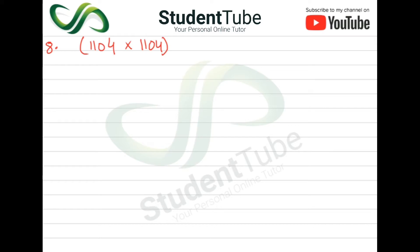Question number 8, we have 1104 × 1104. We will do the last question. First we will do this 1104, we will square it. Then we will split it. How do we do it?